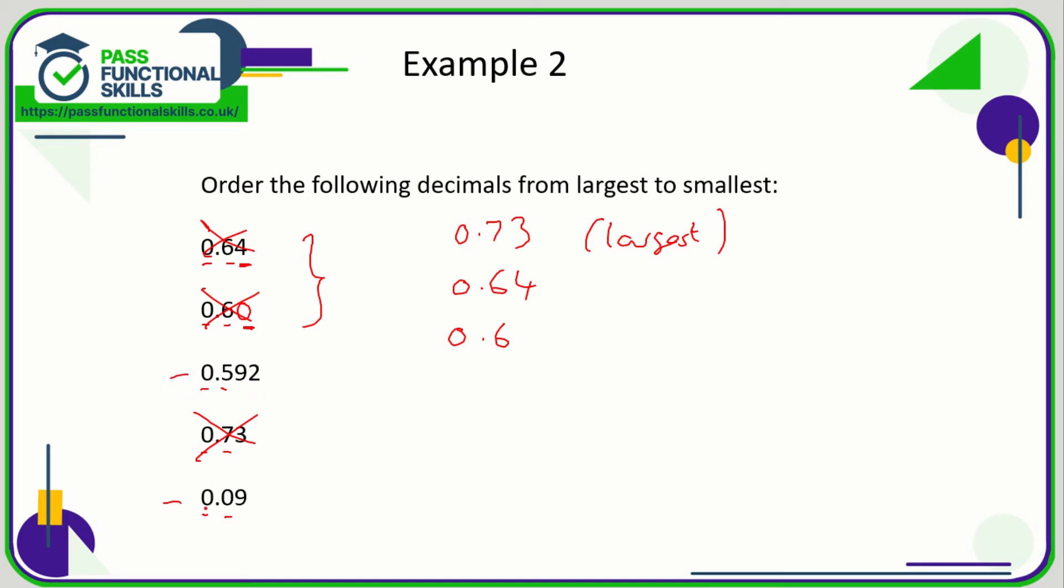We've got 0, a decimal point, but afterwards we've got a 5 and a 0. Five is greater than 0, so 0.592 is therefore greater than 0.09, which is the smallest of these five decimals.